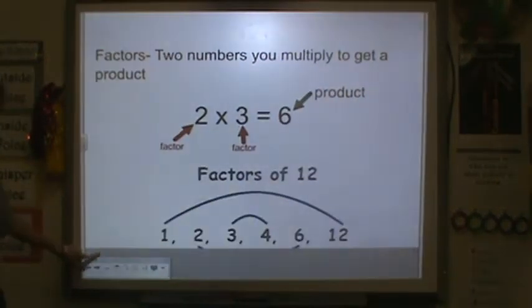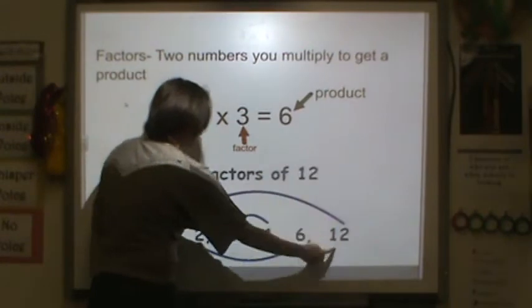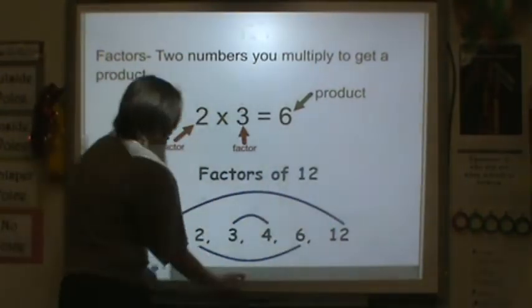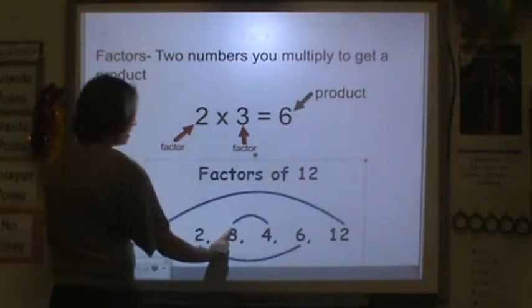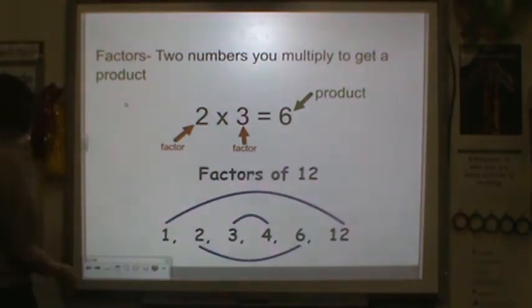So for example, here are the factors of 12. 1 times 12 gets you 12. 2 times 6 gets you 12. 3 times 4 will get you a product of 12.